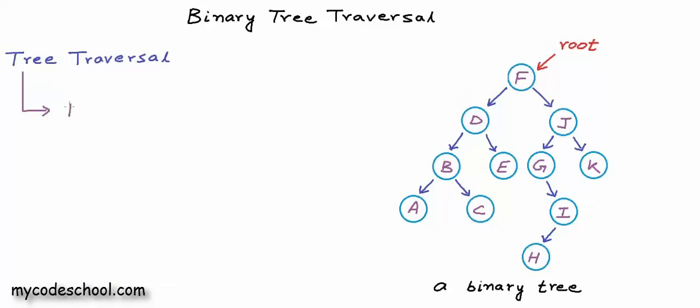We can either go breadth-first or we can go depth-first. Breadth-first traversal and depth-first traversal are general techniques to traverse or search a graph. Graph is a data structure and we have not talked about graph so far in this series; we will discuss graph in later lessons. For now, just know that tree is only a special kind of graph, and in this lesson we are going to discuss breadth-first and depth-first traversal in context of trees. In a tree, in breadth-first approach, we would visit all the nodes at the same depth or level before visiting the nodes at the next level.